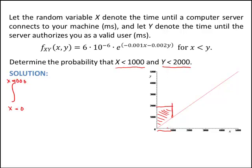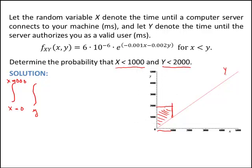For x's from 0 to 1,000, let's figure out what happens with y. For any x in that region, y goes from the line y equals x up to the line y equals 2,000. So the inner integral bounds are from y equals x to y equals 2,000. The integrand is the joint density function f(x, y). The inner integral is dy and the outer integral is dx.